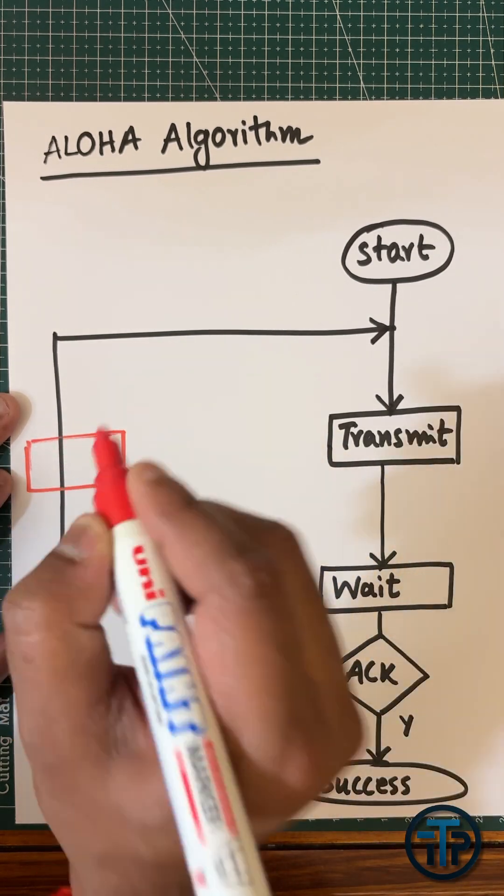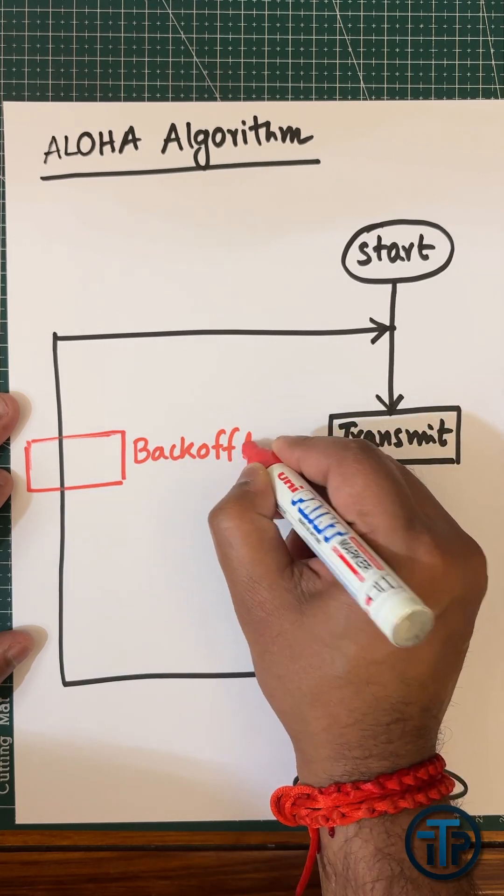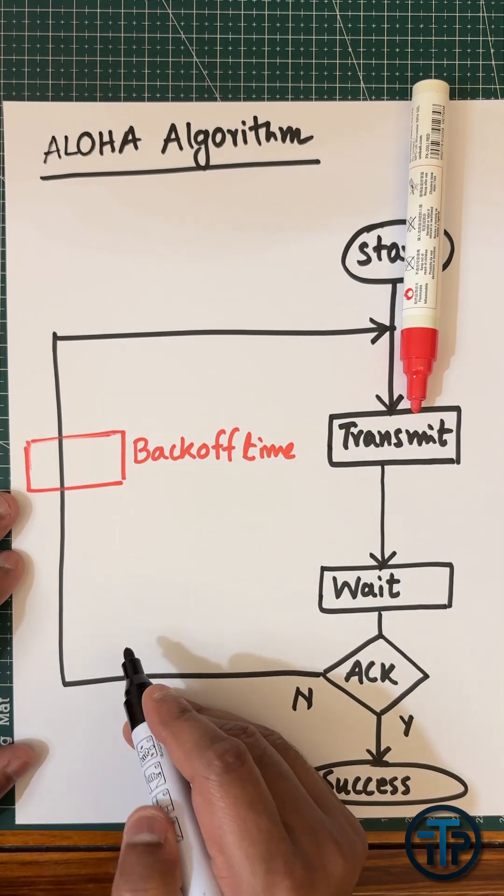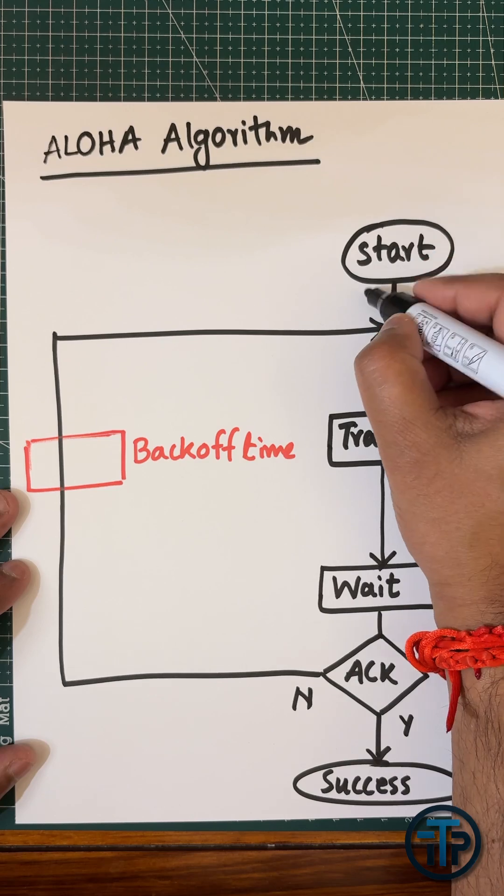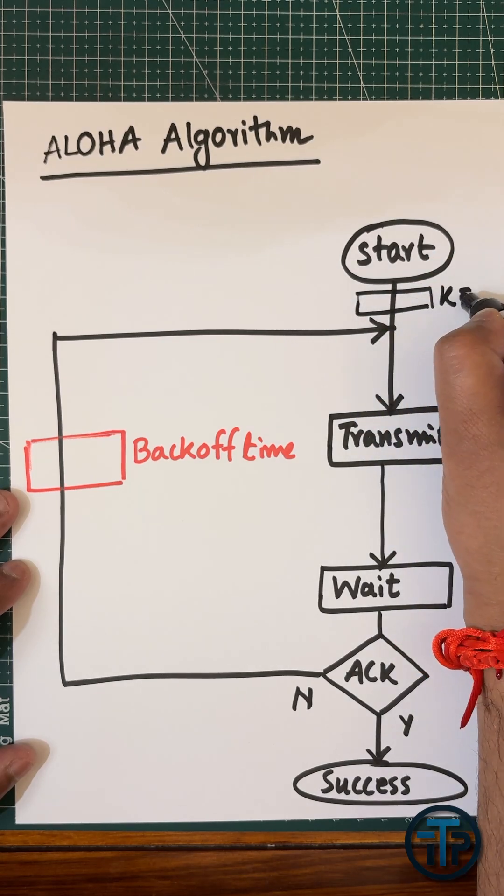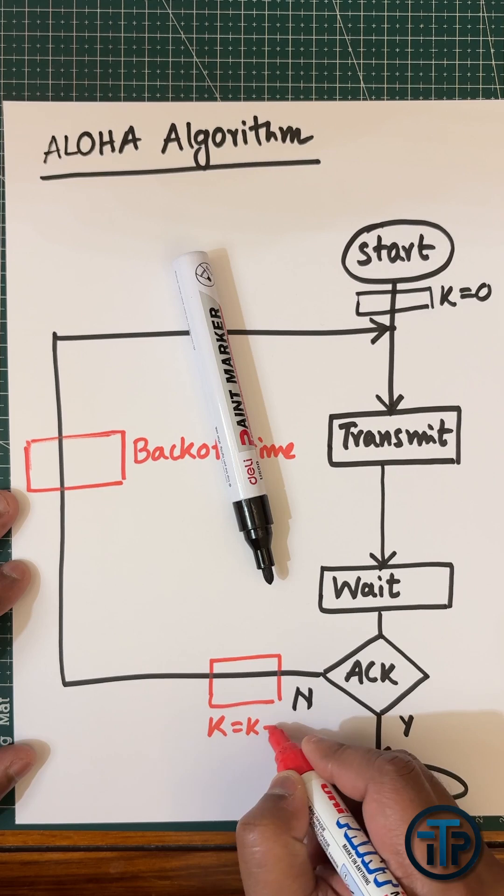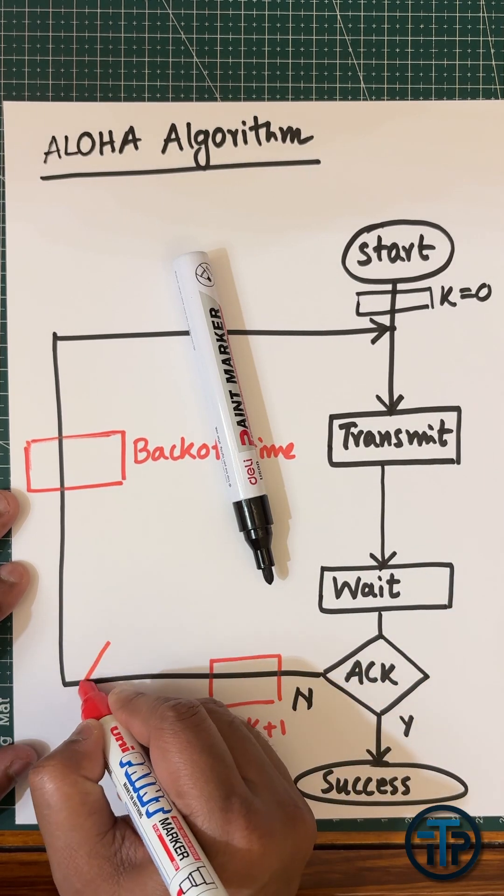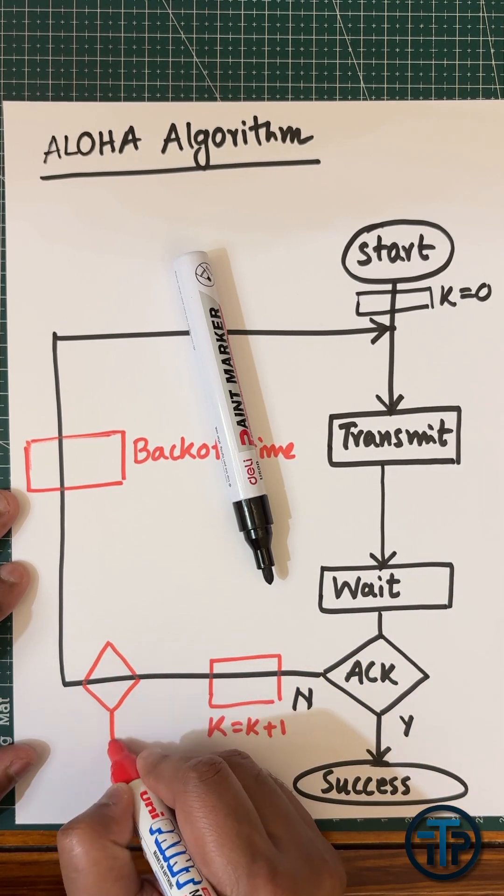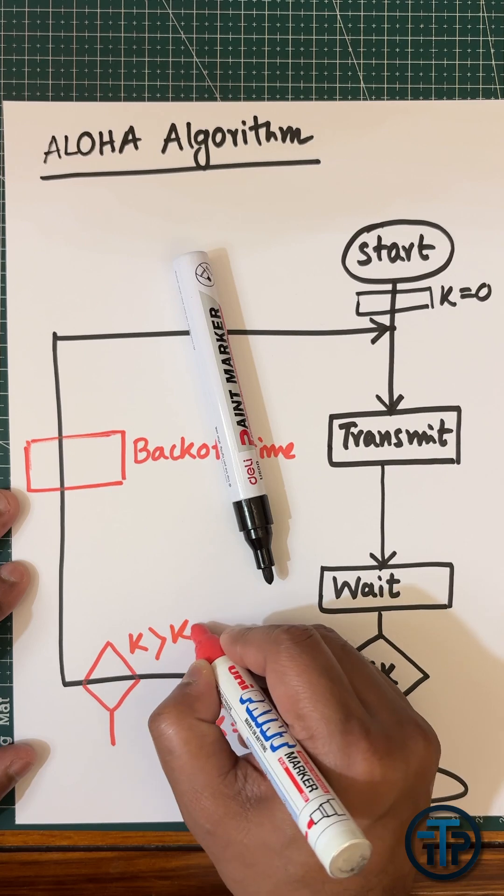For the retransmit, you have to wait some sort of time, which we call backoff time. Now, this process cannot continue for an unlimited amount of time, so we have to put some kind of limit. For example, K = 0, and each time you increase the counter: K = K + 1.